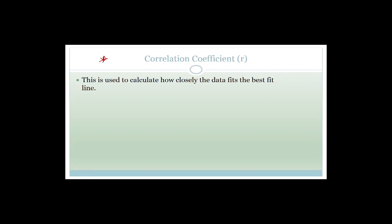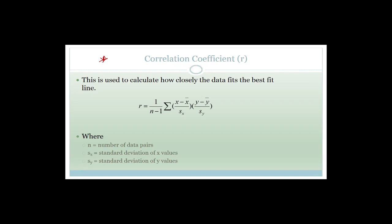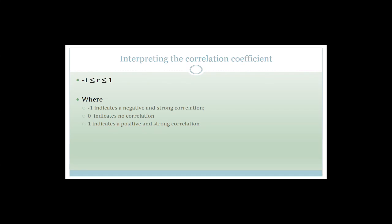Okay, so let's carry on. We were talking about the correlation coefficient. This is used to calculate how close the data fits the best fit line. R is one over n minus one times our summation — this is the correlation coefficient — where n is the number of data pairs, S of x is the standard deviation of x values, and S of y is the standard deviation of y values. Our calculator calculates the correlation coefficient, which is quite cool for us. What's important is to be able to interpret the correlation coefficient.